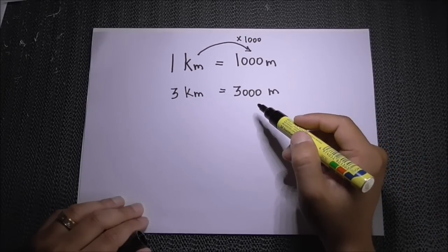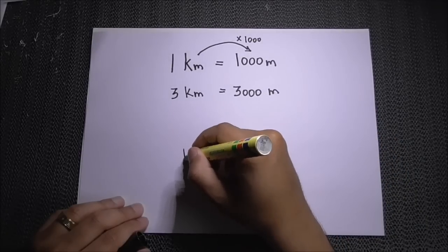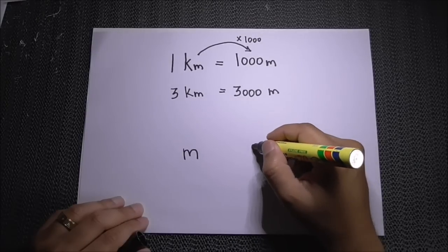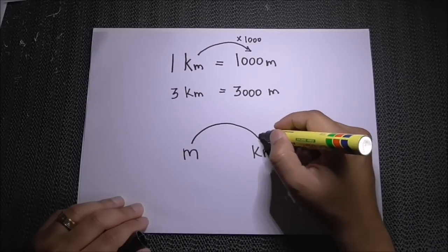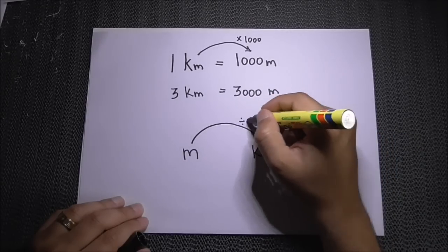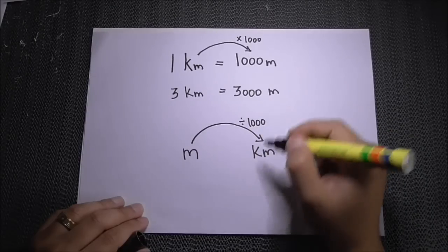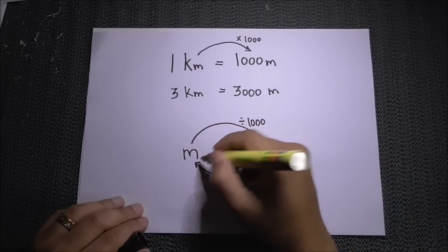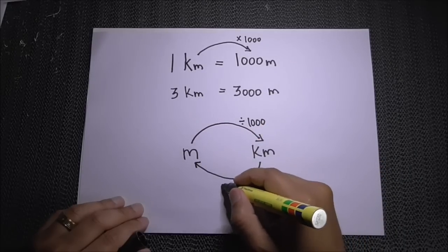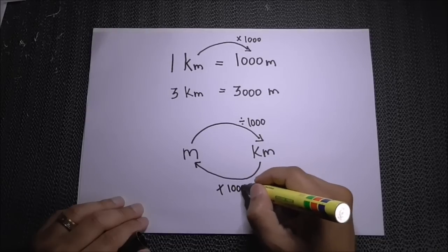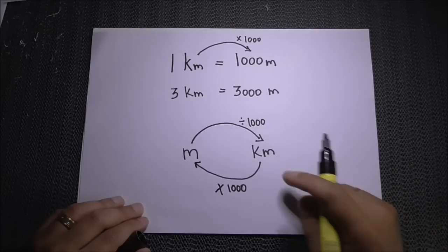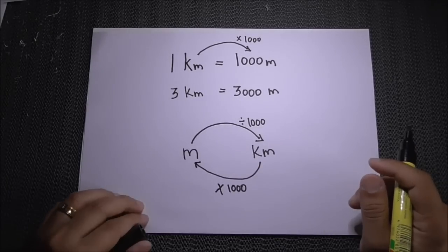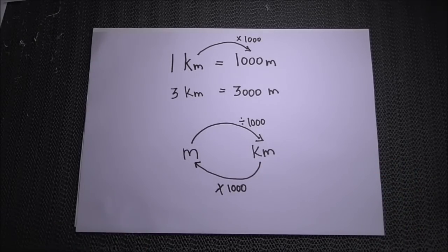The basic rule is: when converting from meters to kilometers, you divide by one thousand. When converting from kilometers back to meters, you multiply by one thousand. And that's how you convert meters to kilometers and kilometers back to meters — thank you for watching!